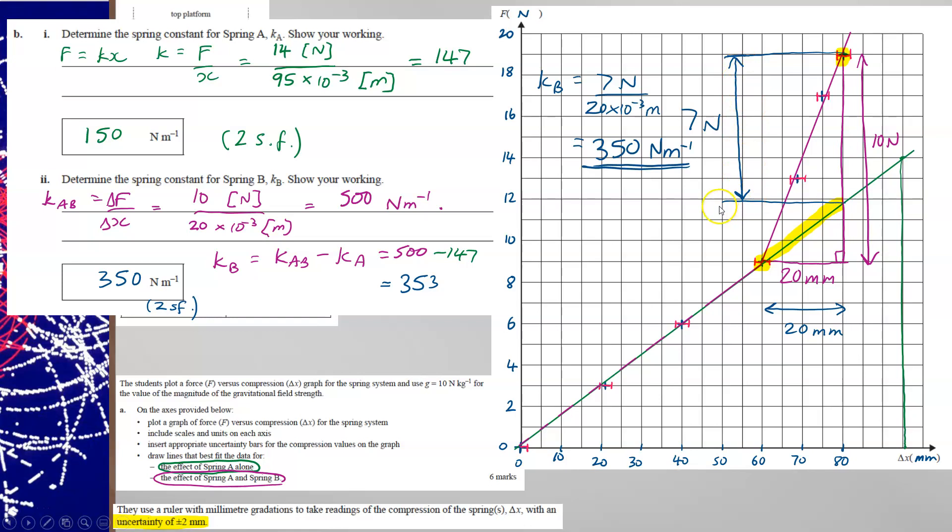And so spring B supports seven newtons of the force. The 10 newtons of force, of course, is shared between the two springs. So the constant K would be seven divided by 20 millimetres, which is again 350 newtons per metre.